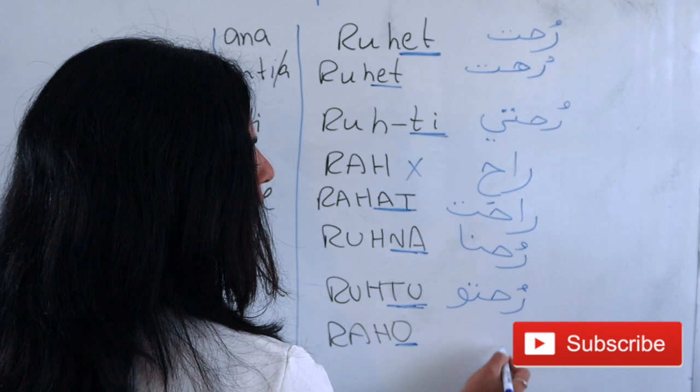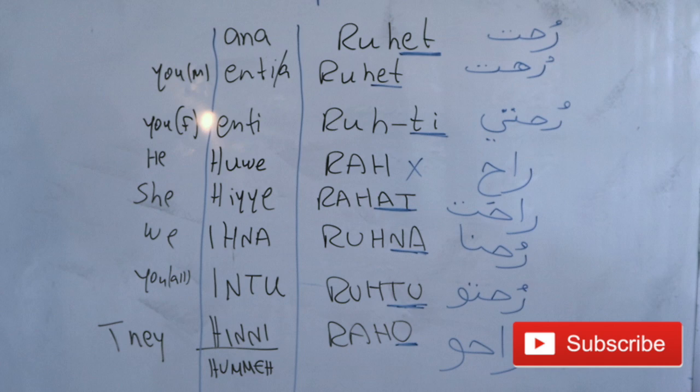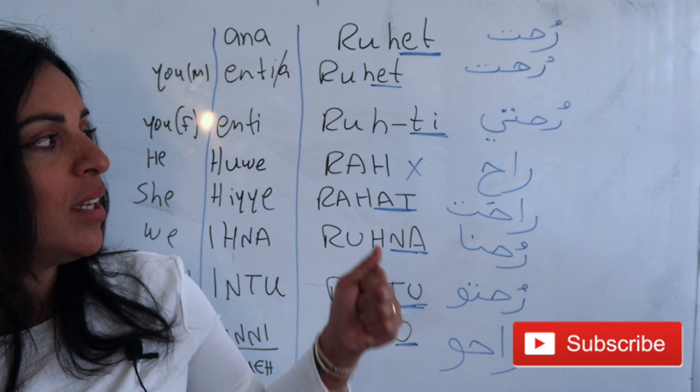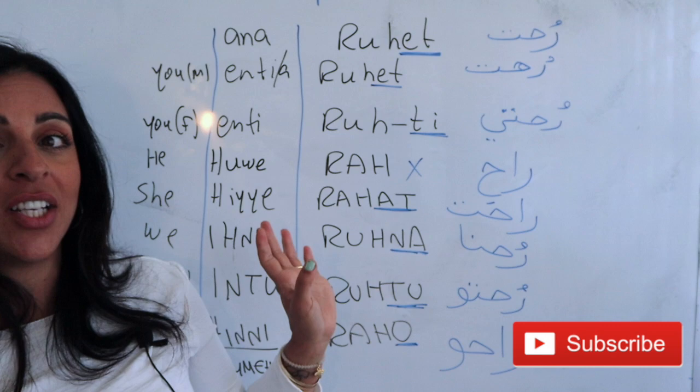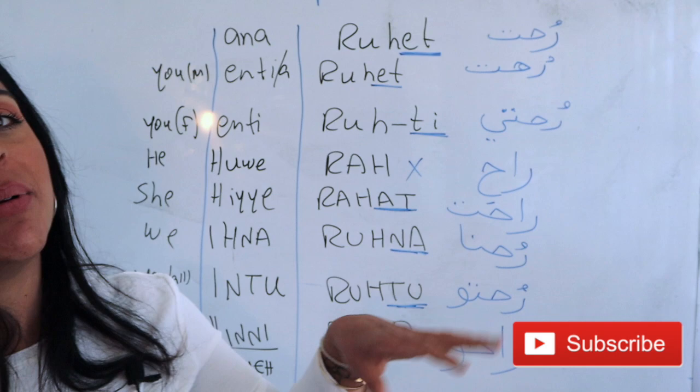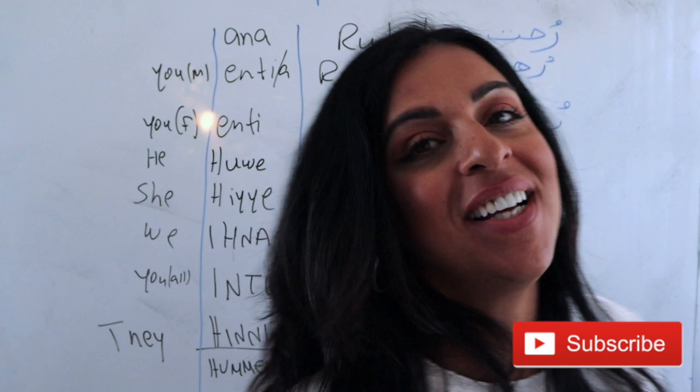This verb conjugation of 'to go' applies to Palestinian Arabic, Jordanian Arabic, Lebanese, and Syrian Arabic. This is the urban dialect spoken across all four countries and understood by the majority of Arabs. The conjugation is similar across Arabic dialects, except for the Maghrib dialect, which is a bit more distant from the Levant area.